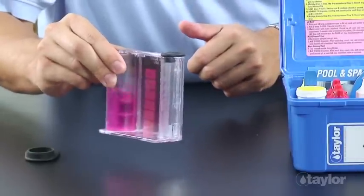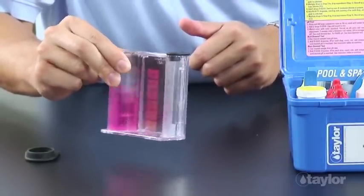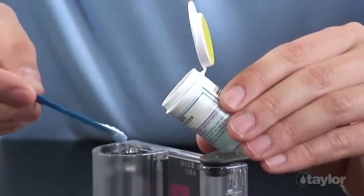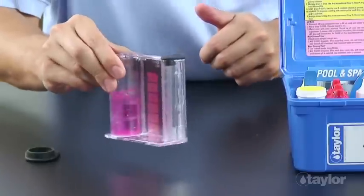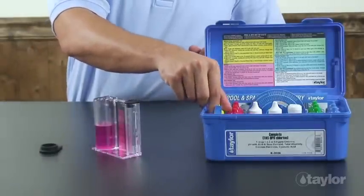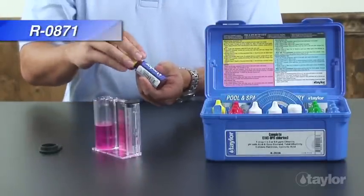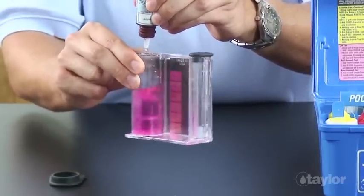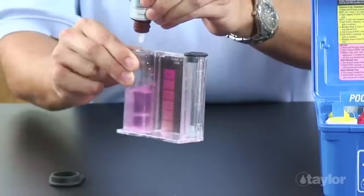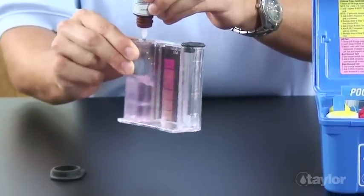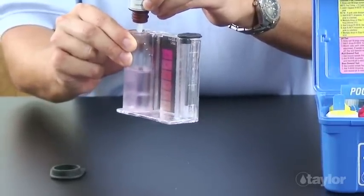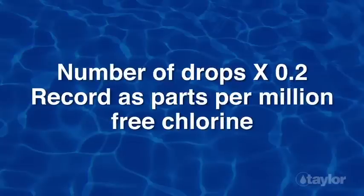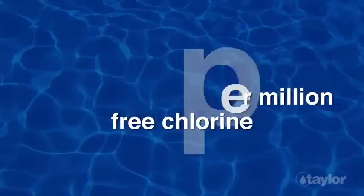Swirl until all the powder dissolves. If free chlorine is present, the sample will turn pink. If the pink color disappears, continue adding the DPD powder a dipper at a time, mixing between additions until the sample turns pink again. Add reagent 871 for chlorine drop-wise, swirling and counting after each drop until the sample goes from pink to colorless. Multiply the drops needed to make the color change by 0.2 and record the result as parts per million free chlorine.